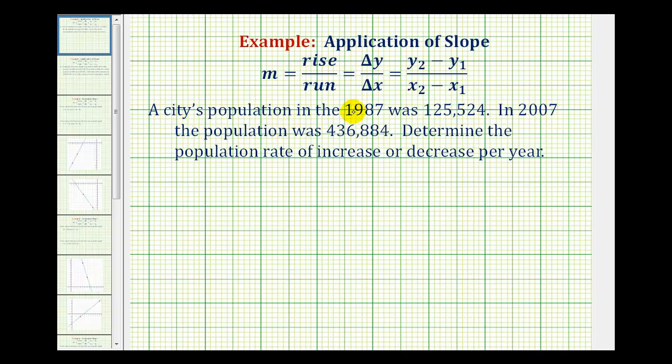A city's population in 1987 was 125,524, and in 2007 the population was 436,884. We want to determine the population rate of increase or decrease per year over this time period.